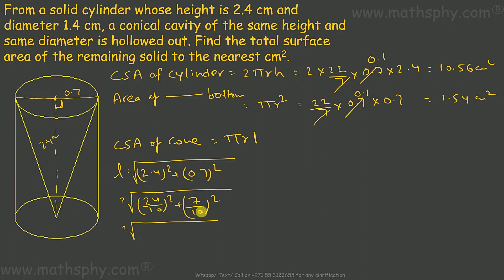This eases out your calculation. So this will be 625 over 100, which is 25 over 10. 625 root will be 25, 100 root will be 10, so this becomes 2.5 cm. So this will be 22 over 7 into radius 0.7 into 2.5. This comes to 5.5 cm².